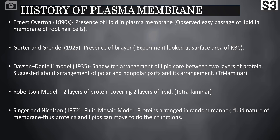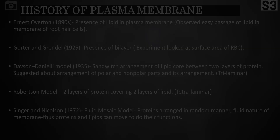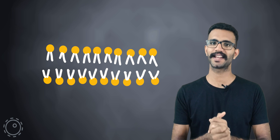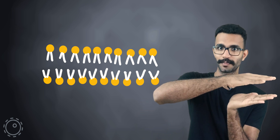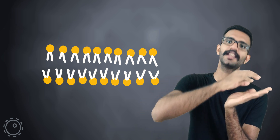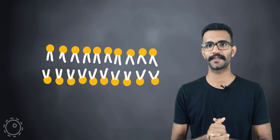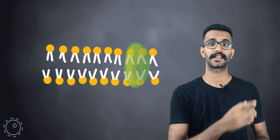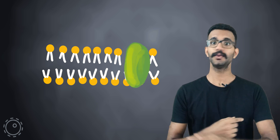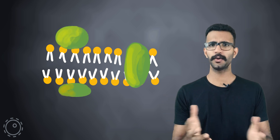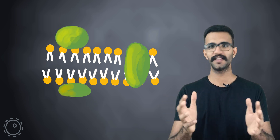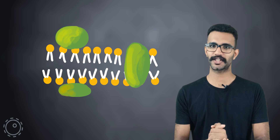To summarize: we started with the Overton model, which suggested the presence of lipid in a membrane, and concluded with the fluid mosaic model proposed by Singer and Nicholson. The fluid mosaic model suggests two layers of lipid with proteins present within, which can be of two types — intrinsic or extrinsic. The detailed structure will be discussed in the next video.